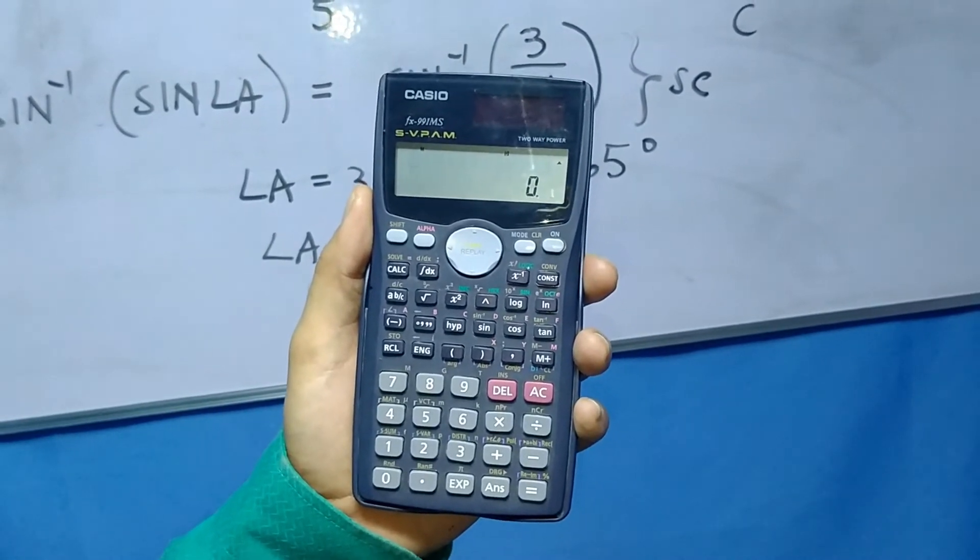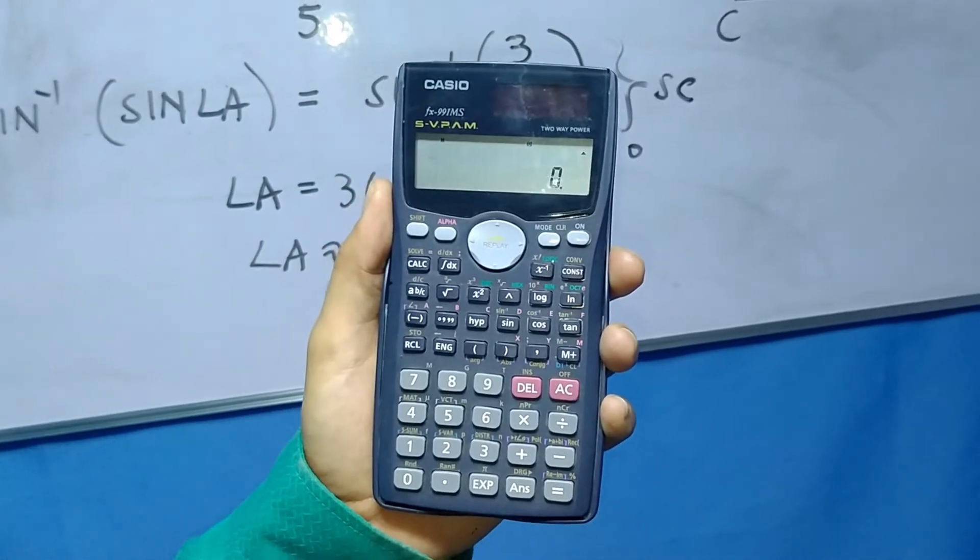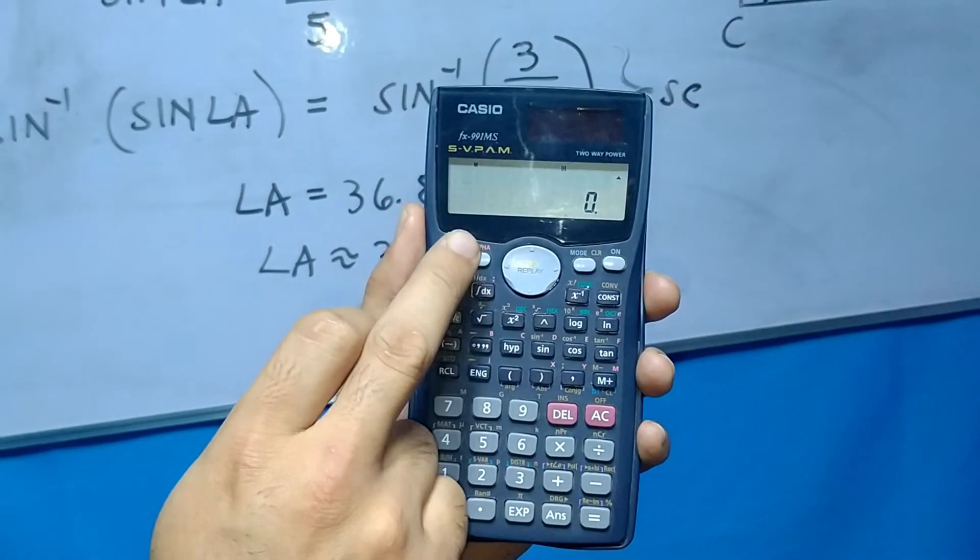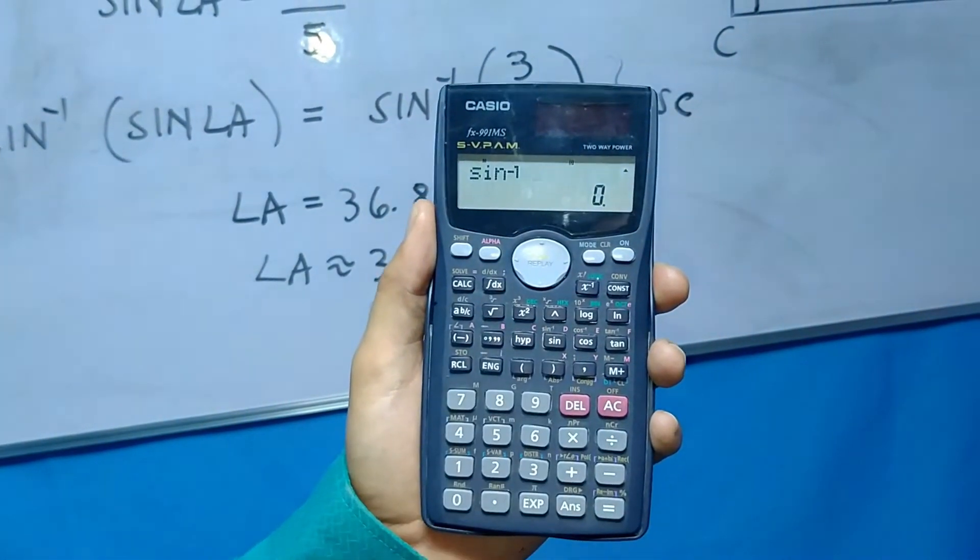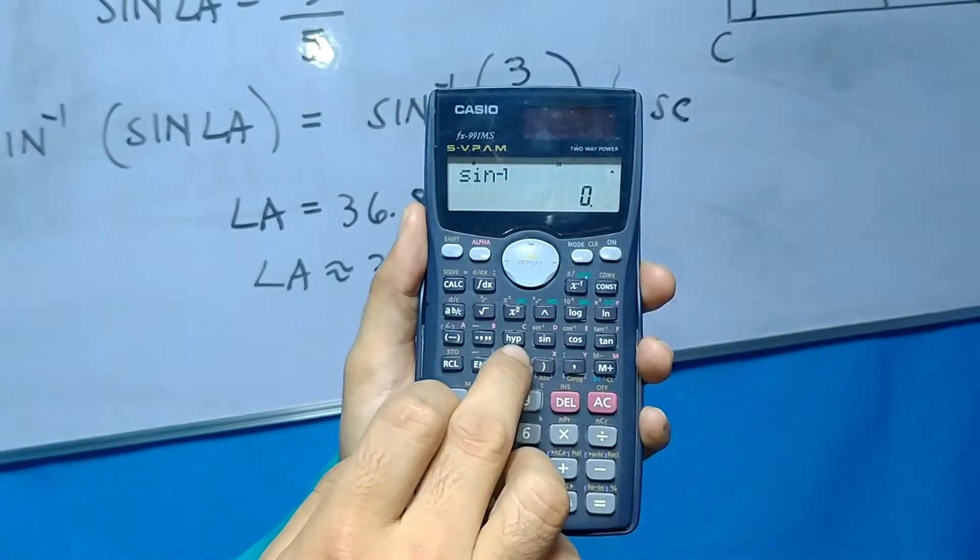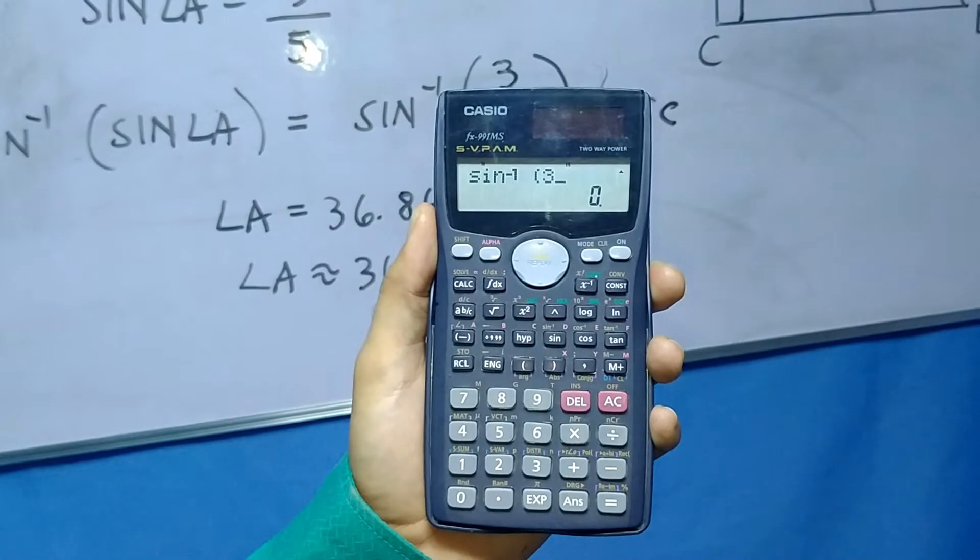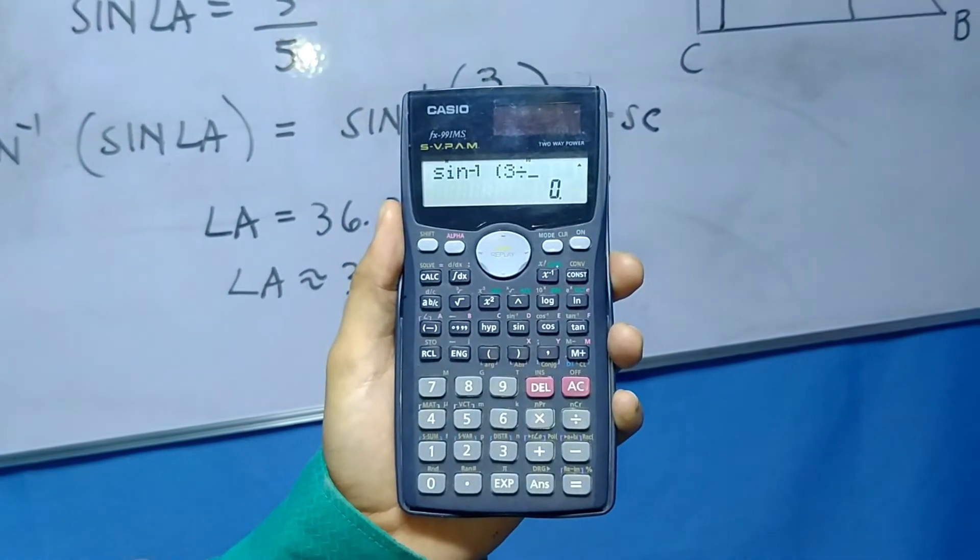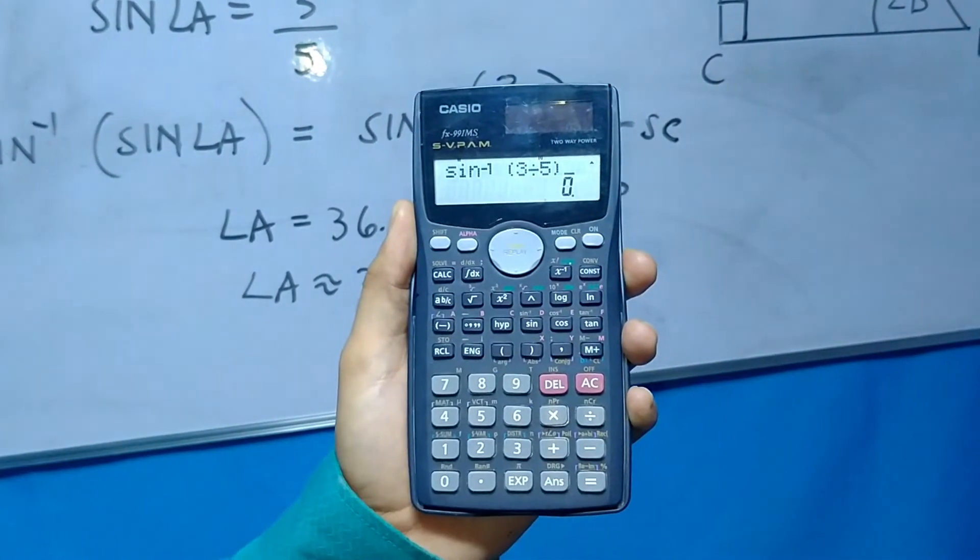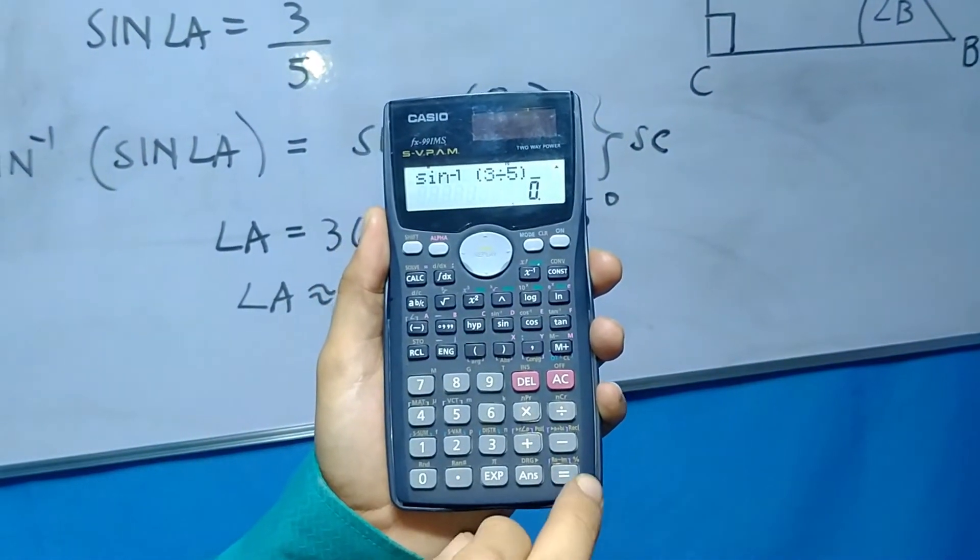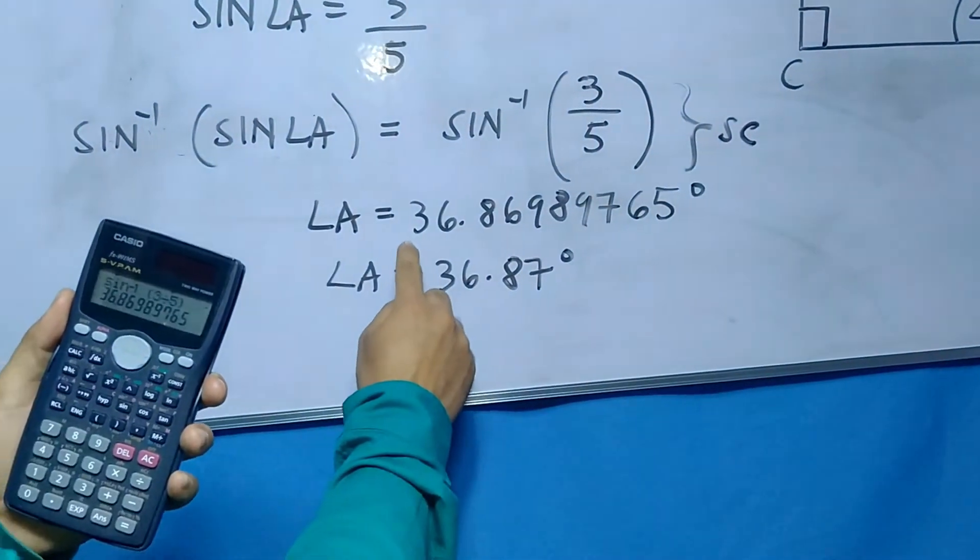Class, I will show you how to use the scientific calculator to compute for the measure of acute angle. First, let us press the keypad with the word shift, and then the keypad with the word sin, and then the keypad with the open parenthesis, and then the keypad with number 3, then the keypad with division symbol, the keypad with number 5, and the keypad with close parenthesis. Then, press the keypad with equal sign. And this is how we get this answer.